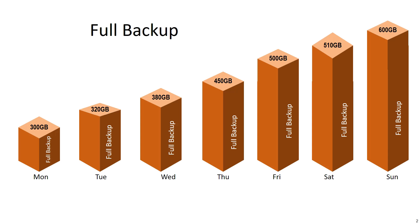For example, on Tuesday we have 20GB of additional data. On Wednesday we have 380GB, and Thursday 450GB. When we do a full backup each day, we copy the entire full backup size every time. So doing a full backup means copying everything each time.